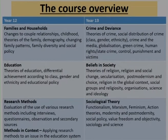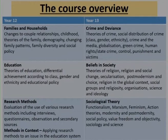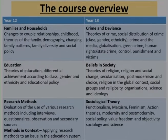The third big theme in year 13 is sociological theory — looking at the big theories in sociological thought in quite a bit of detail. We look at functionalism, Marxism, feminism, action theories, modernity, post-modernity, and then wider themes such as the relationship between sociology and social policy, value freedom and objectivity, and the big question of whether sociology is, can be, or should be a science.